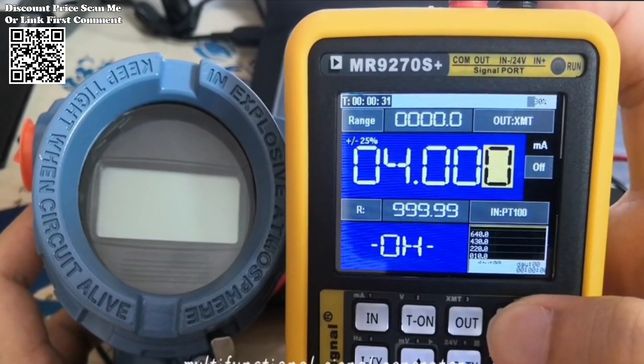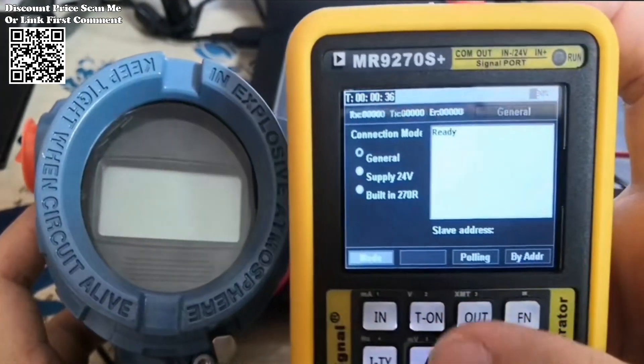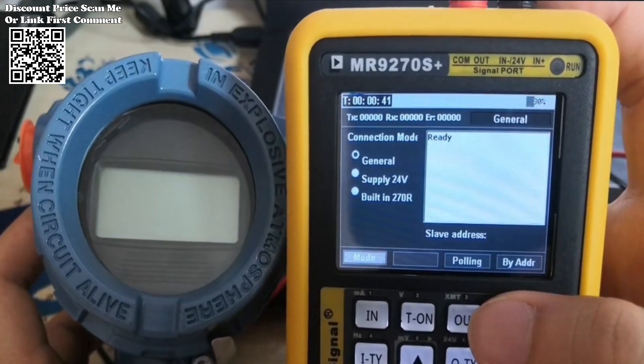Feature 6: Real-time curve. The change trend of input and output signals can be displayed through a curve. The collection time of the curve can be set, and the curve can be automatically displayed within a certain time range of maximum and minimum values.